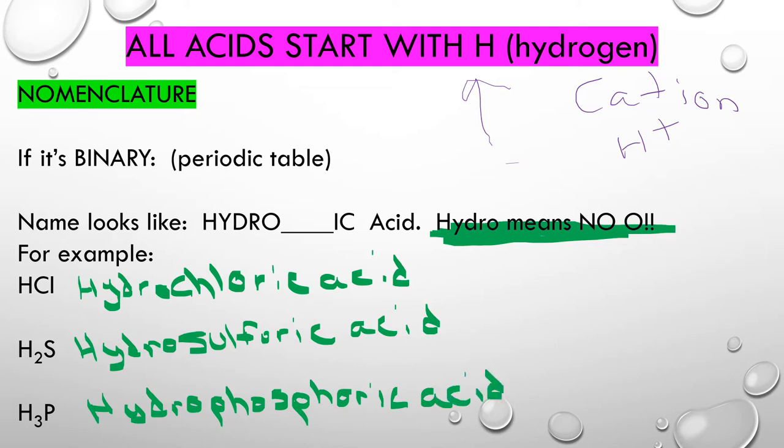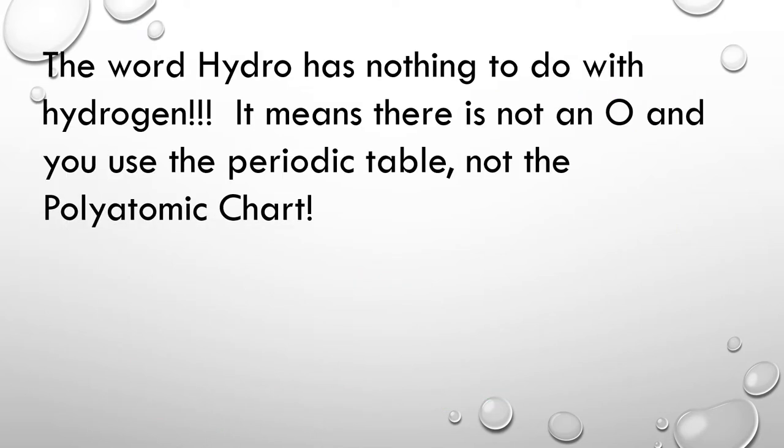That is how we name binary acids. The word hydro has nothing to do with hydrogen. It means no O — when you use the periodic table, not the polyatomic ion chart.